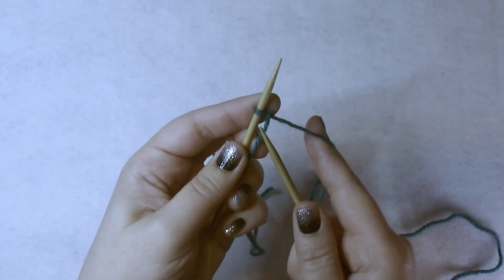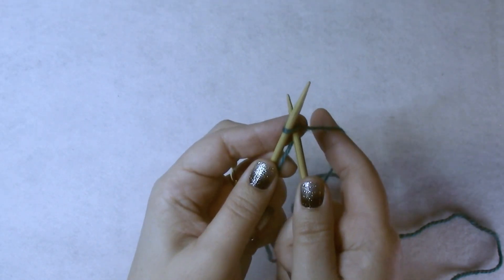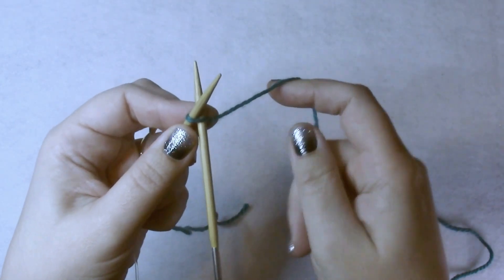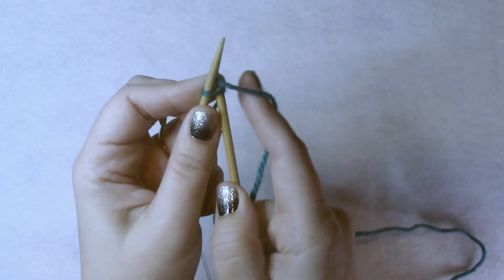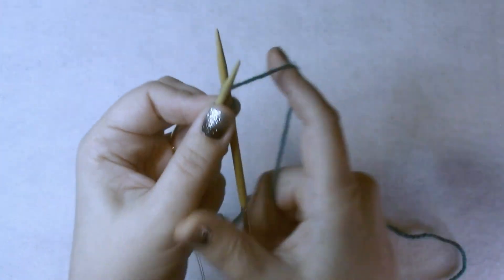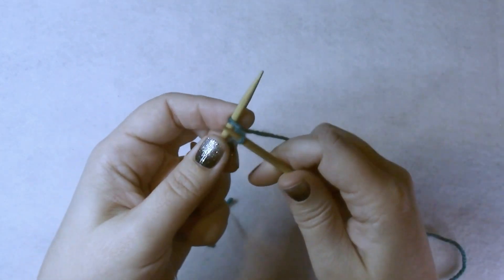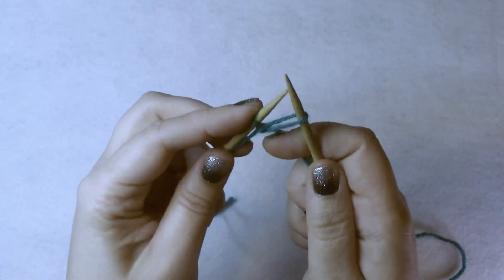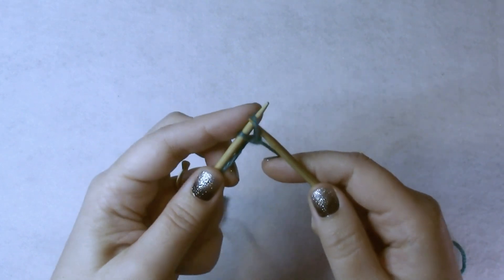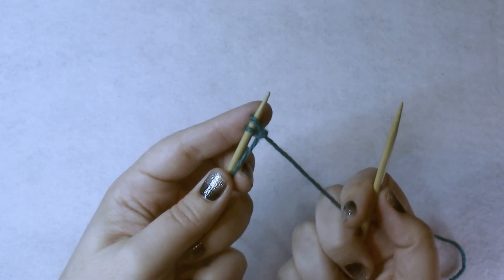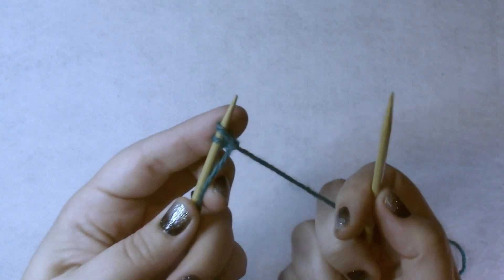You insert your needle from front to back into the loop, you yarn over, you pull that new loop through the old one, pull up the new loop and toss it onto your needle without removing the old one. So there are now two stitches on your needle.